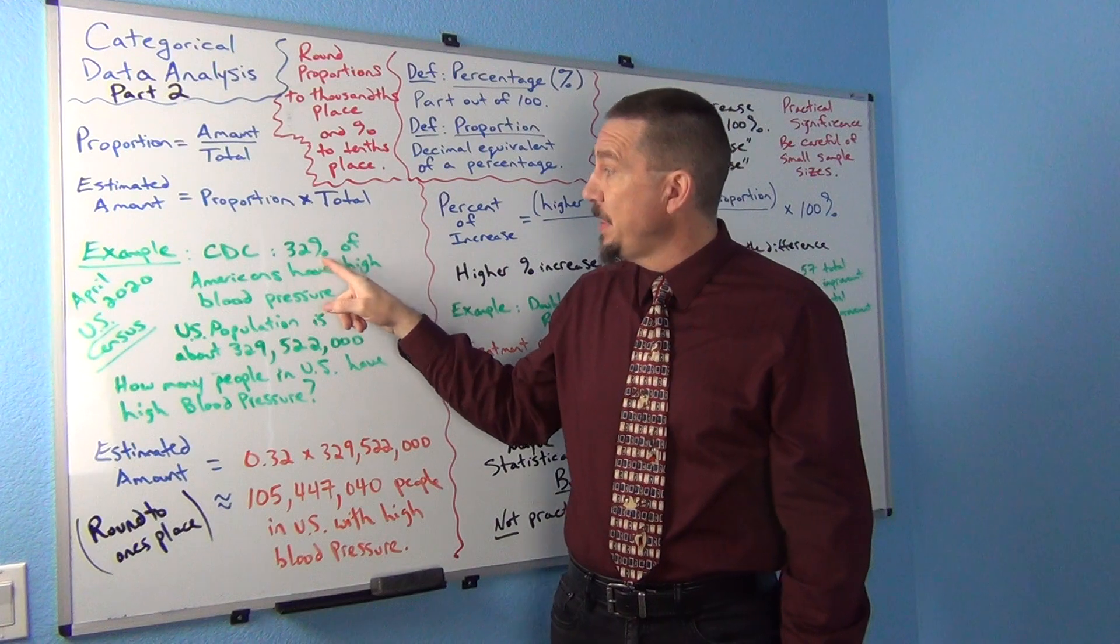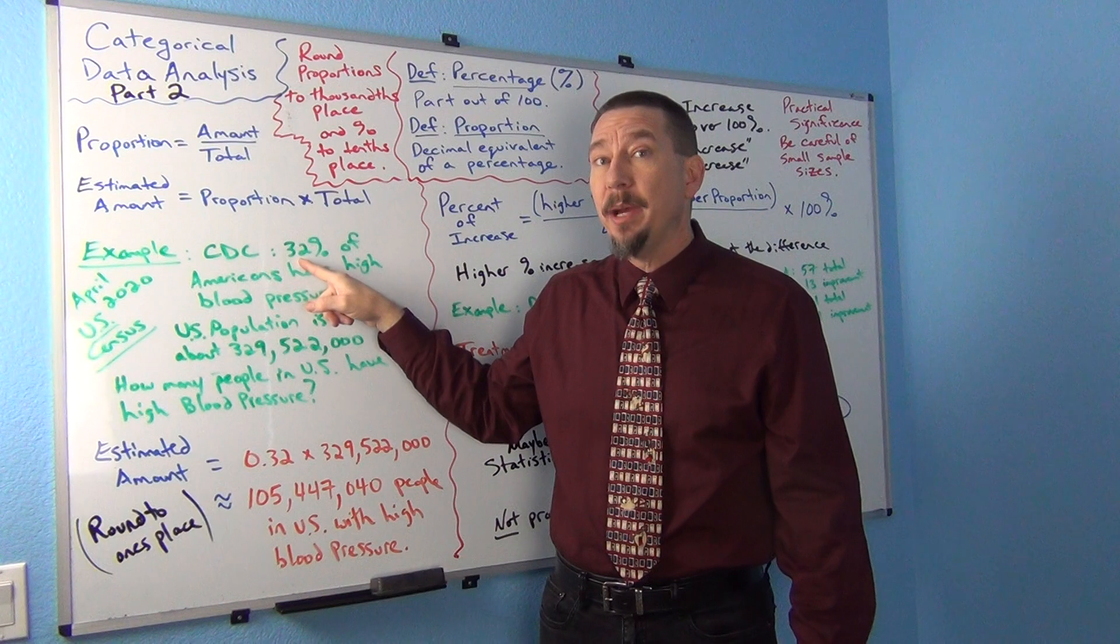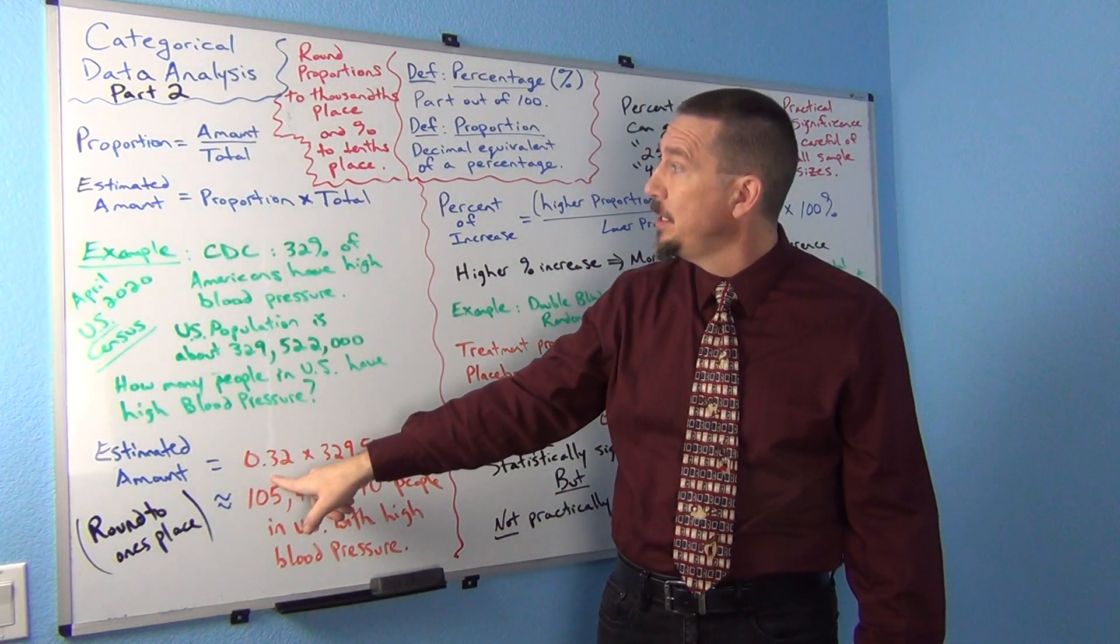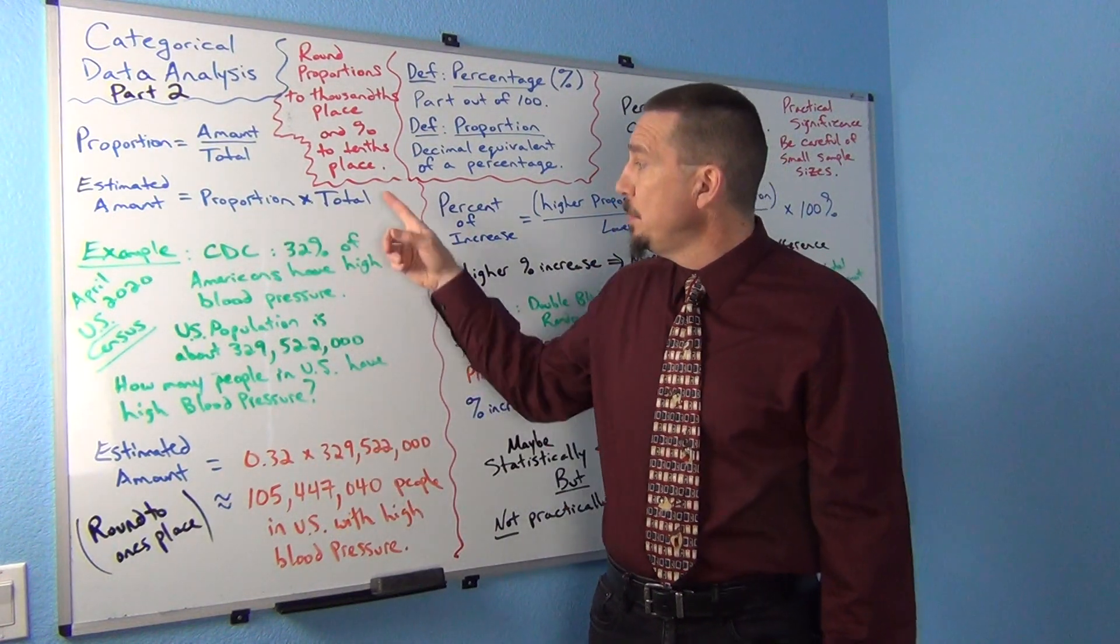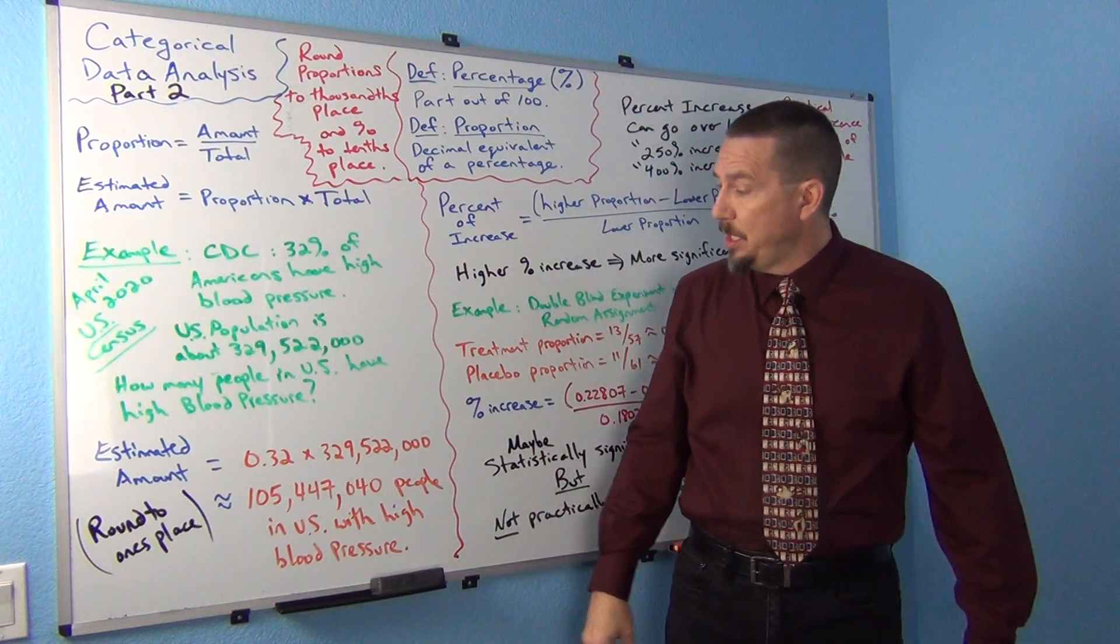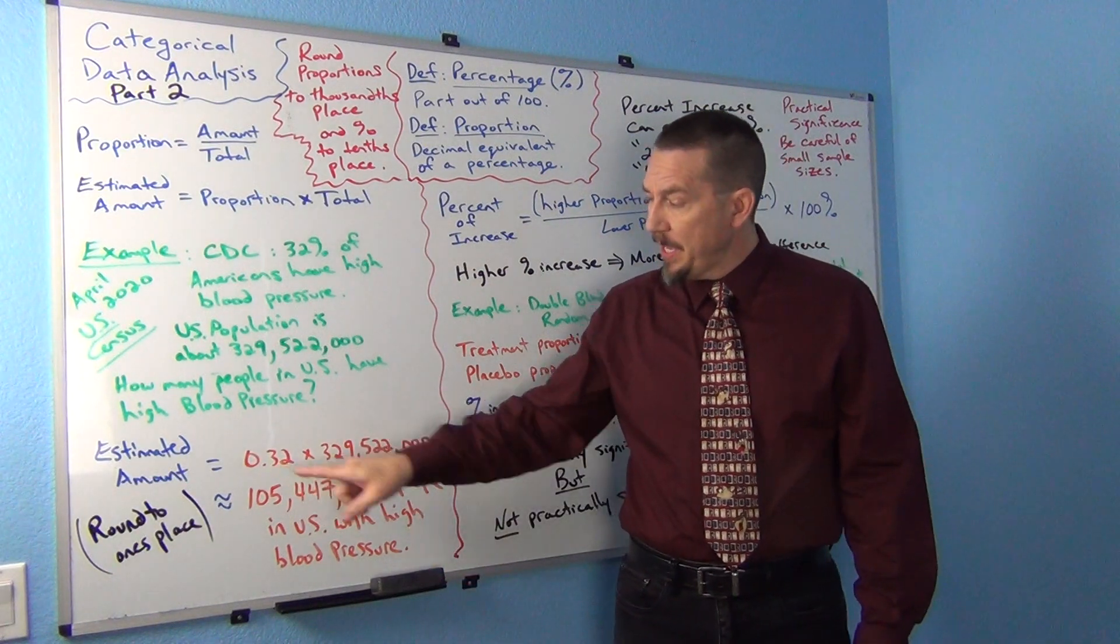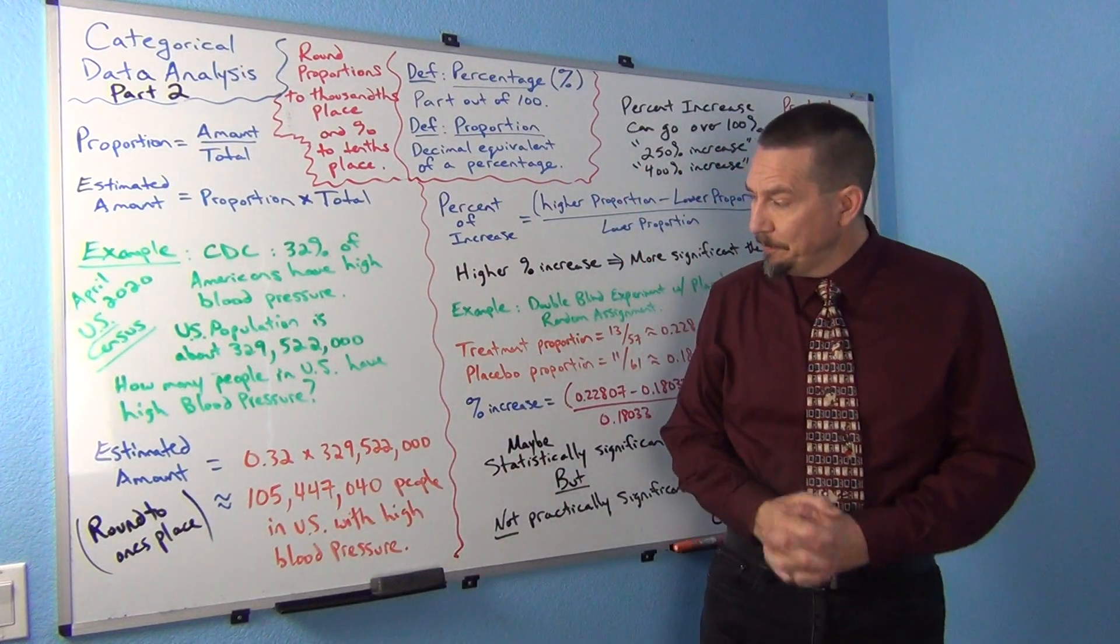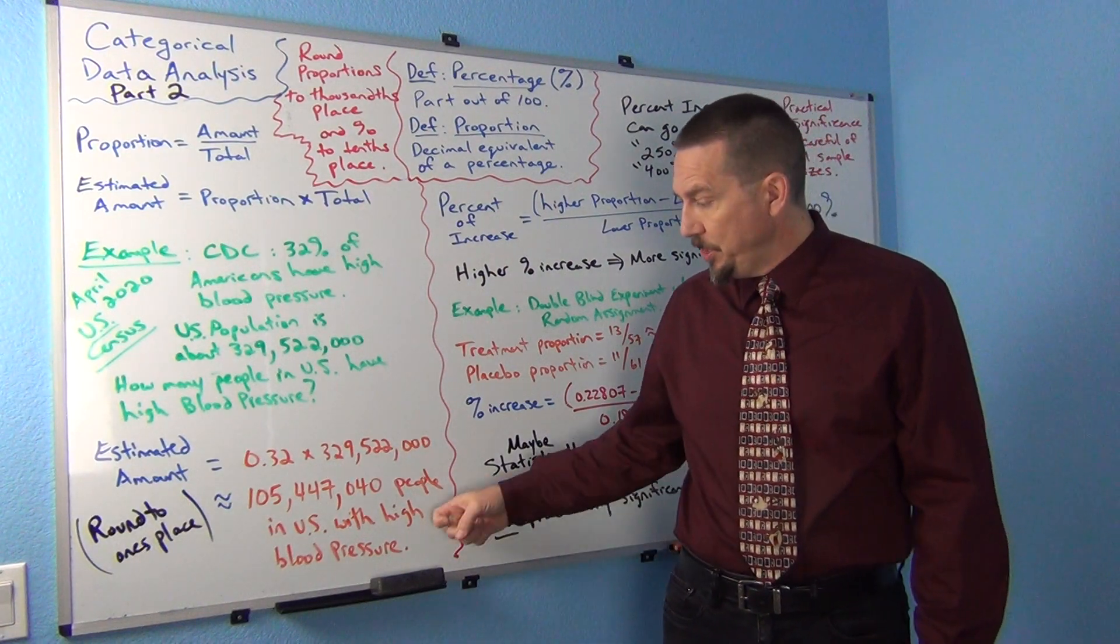So if we divide 32 divided by 100, you would get 0.32. 0.32 would be the proportion. So where it says proportion in the formula, I'm putting in 0.32. And I'm going to multiply that by the total for my population. So 329,522,000. I'm going to multiply that by 0.32. And I would get approximately 105,447,000 people in the U.S. with high blood pressure.